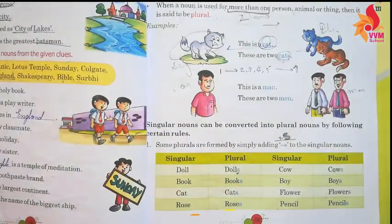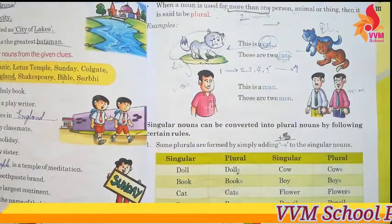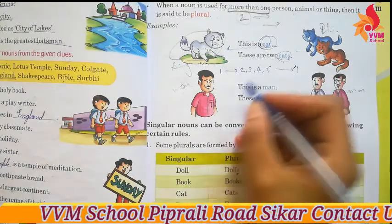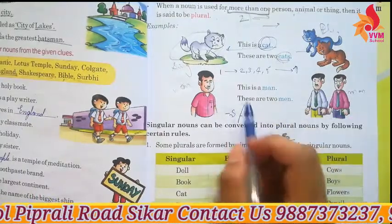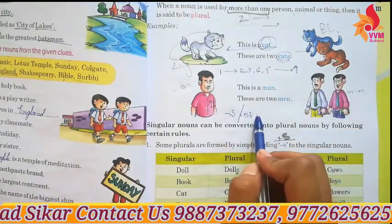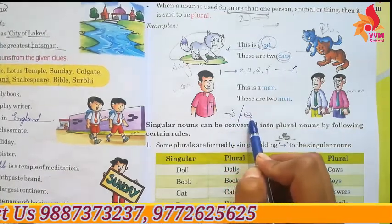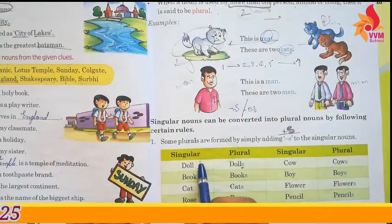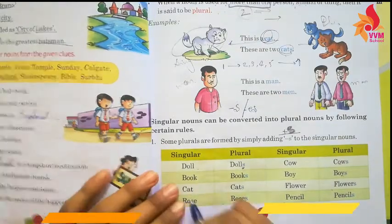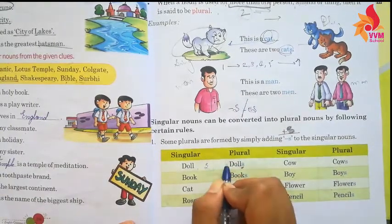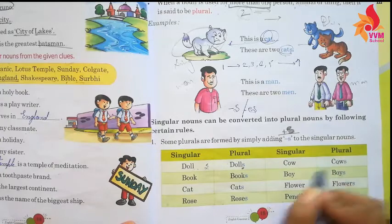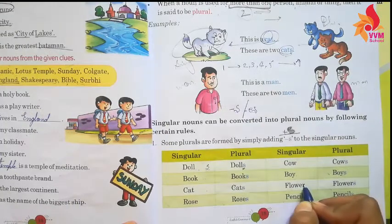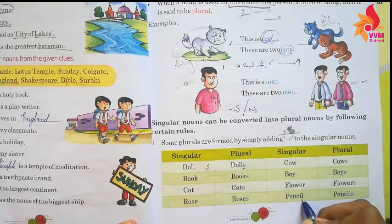Fir humare paas following mein kuch singular and plural diye hain. Agar aapko singular ko plural mein change karna hai, to aap 's' ya 'es' ka use karke change karoge. For example: doll — dolls, cow — cows, book — books, boy — boys, cat — cats, flower — flowers, rose — roses, pencil — pencils.